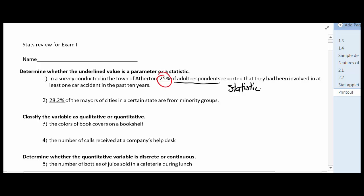Number two, 28.2% of the mayors of cities in a certain state are from minority groups. In this case, they are referring to the population of the mayors. So because it's dealing with a population measurement, we would refer to this as a parameter.